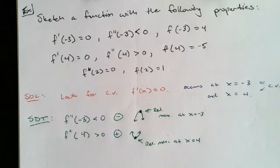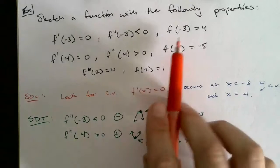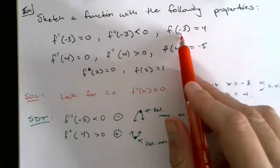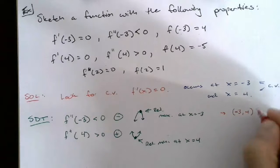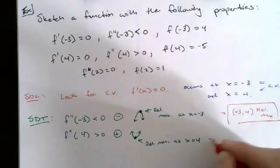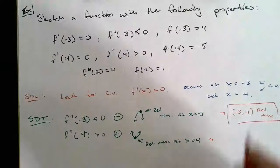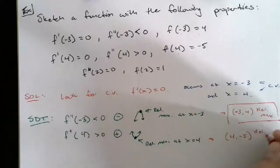Now we find the corresponding y-values for the actual coordinates of the relative max and min by substituting the critical values into the original function. We know f(-3)=4, so the point is (-3, 4) and that's our relative max. And f(4)=-5, so the point is (4, -5) and that's our relative min.